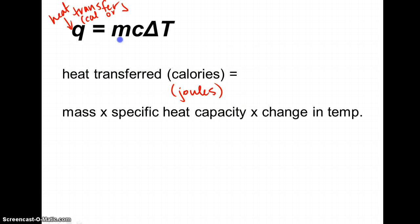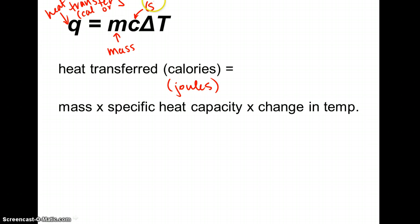Next you have m, that stands for mass. C, sometimes also used as S, stands for specific heat. Each substance behaves differently with a certain amount of energy put into it. For example, water has a really high specific heat—it takes a lot of energy to heat it up or cool it down, whereas something like metal heats up really fast and has a very low specific heat. And then the last component is delta T, the change in temperature.